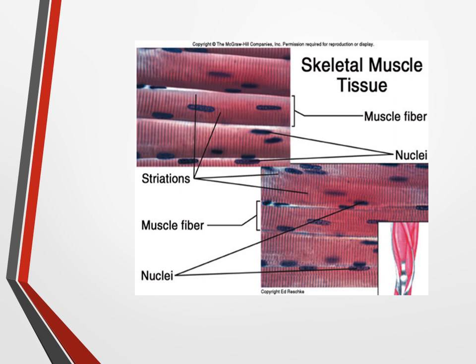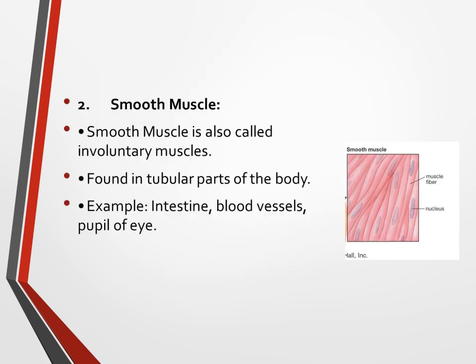The skeletal muscle consists of three parts: origin, belly, and insertion. Now let's move to understand the second type of muscle — smooth muscles, which are known as involuntary muscles. They are found in the tubular parts of the body.